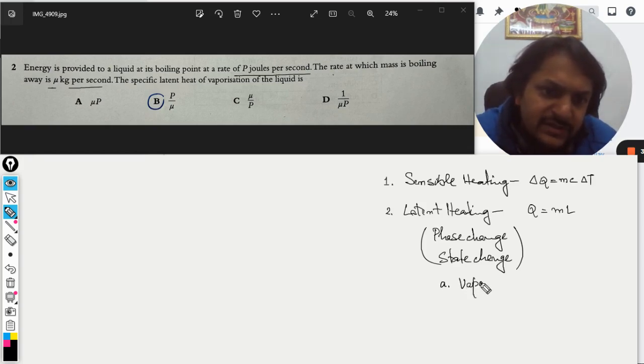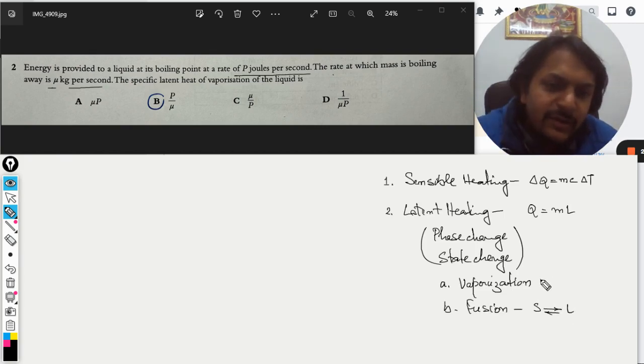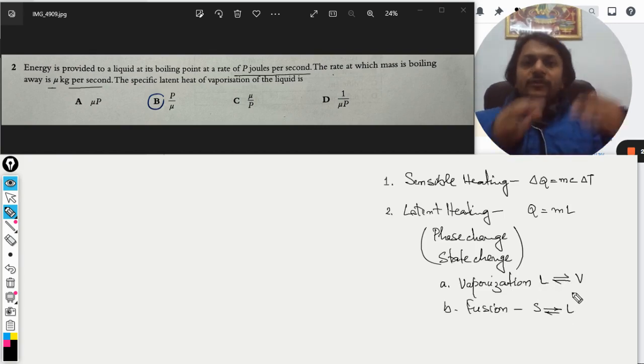This is of two types: one is latent heat of vaporization and the other one is the latent heat of fusion. In fusion, solid is converting into liquid or liquid is converting into solid, and in vaporization the liquid is converting into vapor or the vapor is converting into liquid.